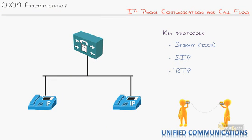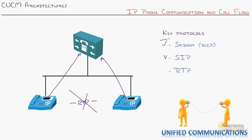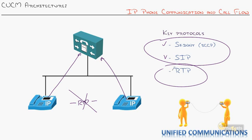Once the phones hang up, the RTP stream stops, disconnecting the audio. The phones both signal — using Skinny or SIP — that the call is now disconnected, and the call manager frees up all the resources and knows the phones are back on hook. Think of Skinny and SIP as the call setup and maintenance protocols, while RTP is the actual sound of audio going across.